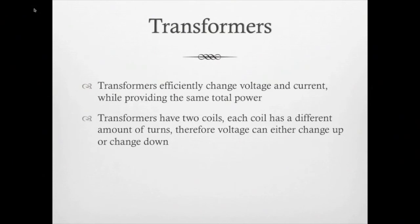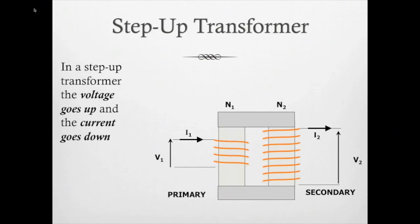Next we have transformers. Transformers change voltage and current but keep the same power. Transformers work because they have two coils, and each coil has a different amount of turns or kinks in it. So you can change the voltage up or you can change the voltage down. So if you want to take the voltage up and keep the current down, that would be a step-up transformer.